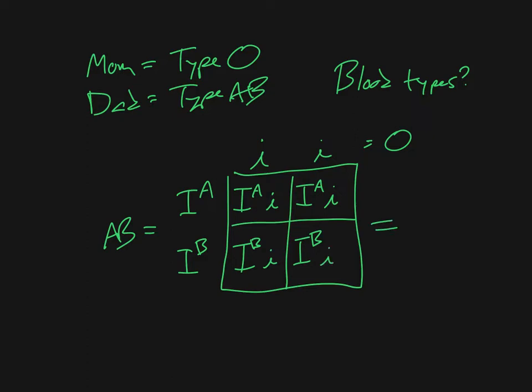So possible outcome for the kids here is 50% type A, which would be the ones here in this top row. And 50% type B would be these ones in the bottom row.